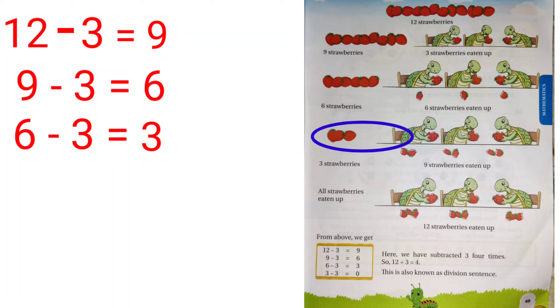Now, again 3 strawberries are eaten up. So, how many strawberries are left? There are no strawberries left anymore. That is 3 minus 3 equal to 0. So, here how many times we have subtracted 3? We have subtracted 3 from 12. How many times? 4 times.